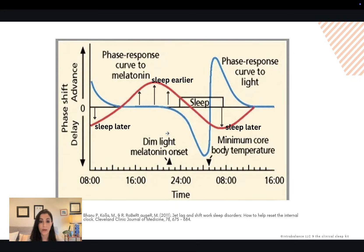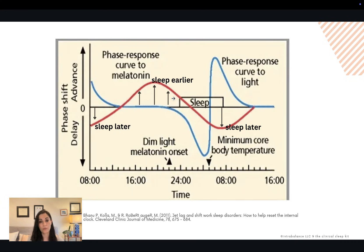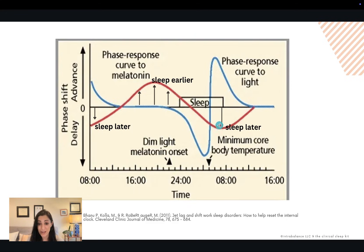Oftentimes people will take melatonin about an hour or two before bedtime. Taking melatonin an hour or two before bedtime has a little bit of an effect, but not that much of an effect if you want to advance bedtime or shift sleep onset earlier. If someone's taking melatonin for its sedative effects, then they might be fine taking it around an hour or two before bedtime. But if they're taking melatonin with the purpose of trying to advance or pull their sleep onset earlier, then the maximal effect is actually about four to six hours before sleep onset — so around dinnertime. Taking it too early is going to have less of an effect. On the flip side, taking it in the morning is going to push sleep later or delay the circadian phase.